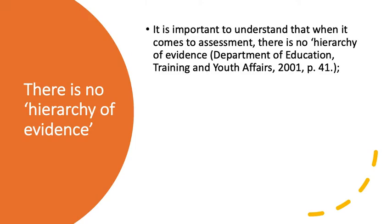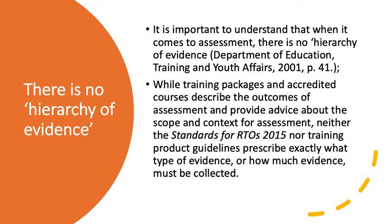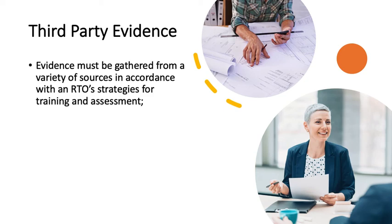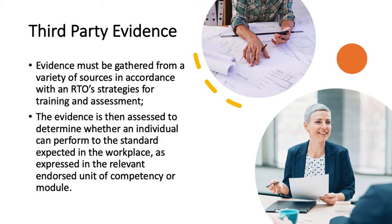It is important to understand that when it comes to assessment, there is no hierarchy of evidence. While training packages and accredited courses describe the outcomes of assessment and provide advice about the scope and context for assessment, neither the Standards for RTOs 2015 nor training product guidelines prescribe exactly what type of evidence or how much evidence must be collected. Evidence must be gathered from a variety of sources in accordance with an RTO's strategies for training and assessment. The evidence is then assessed to determine whether an individual can perform to the standard expected in the workplace as expressed in the relevant endorsed unit of competency or module.